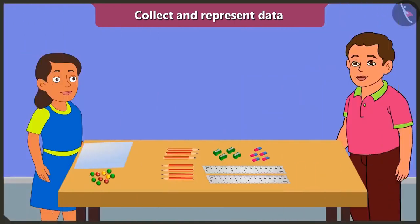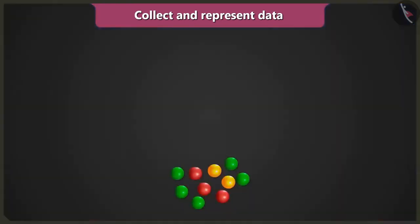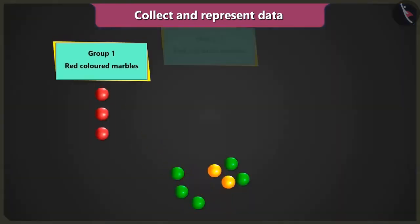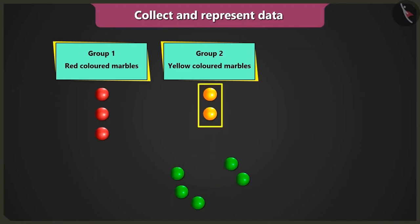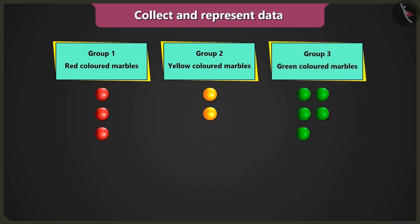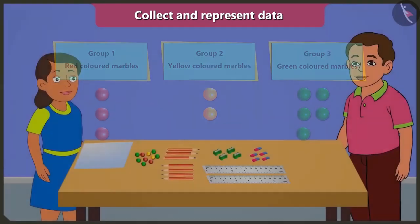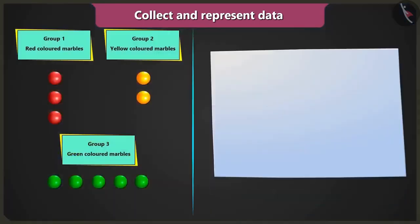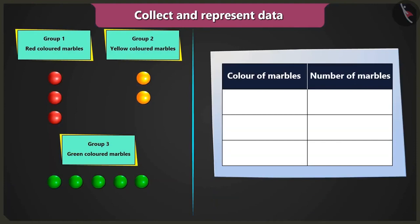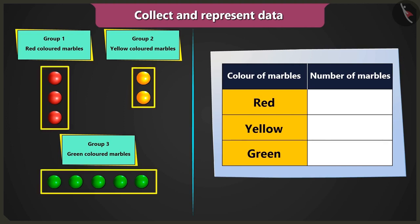Bubbly, first of all you have to make groups of same colored marbles. First group of red colored marbles, second group of yellow colored marbles, and third group of green colored marbles. Now create a table like this. Now you have to write the names of the colors — red, yellow, and green — in the column color of marbles.